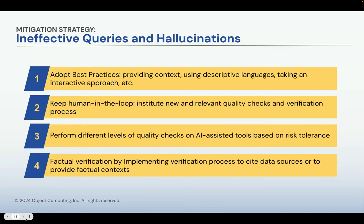The last mitigation strategy is something you've started to see in applications like Bing, where it actually cites the data sources. That's something to really confirm answers come from factual sources rather than Gen AI making things up by itself. This is a good practice when thinking about how a service provider provides answers to users and how you make sure you're not spitting out gibberish answers based on unrealistic data. That's all for this bucket.